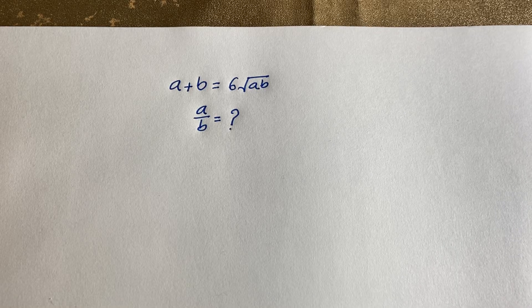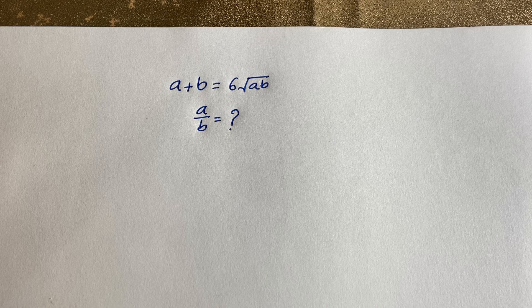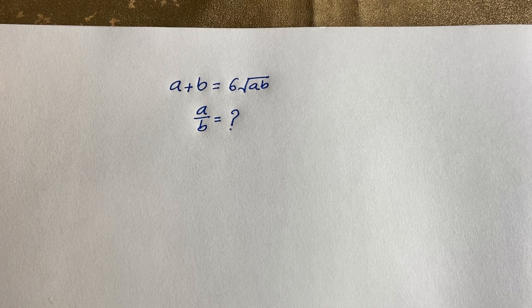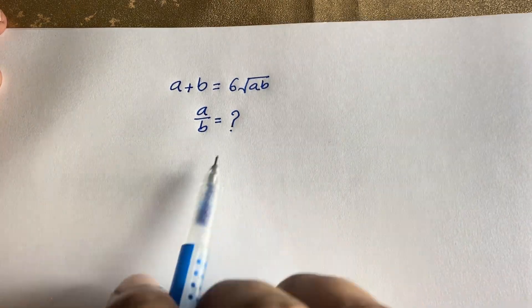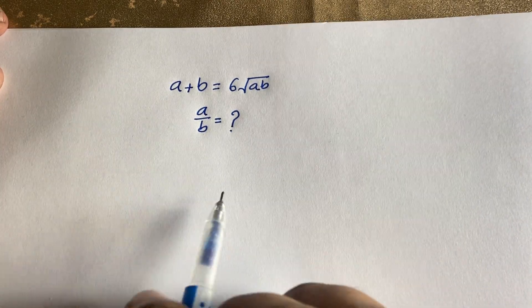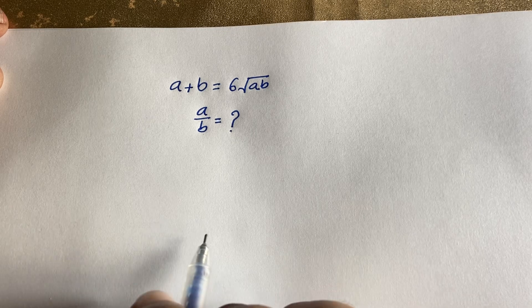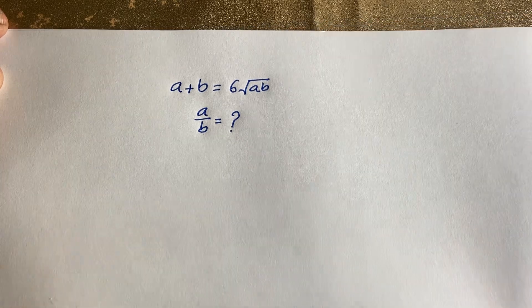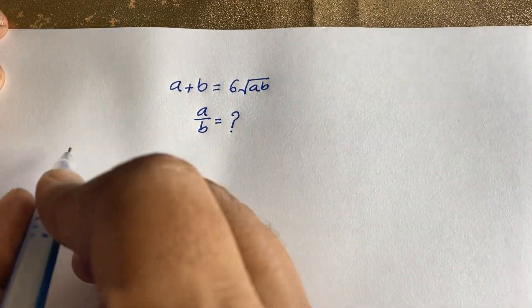Hello everyone, welcome to Rasha's Classroom. Today we have solved this interesting maths olympiad question: a plus b is equal to 6 square root of ab. Find a over b. How to solve this question?